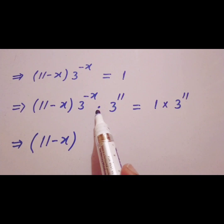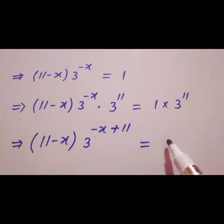We know that when the bases are the same and multiplying with each other, their powers are added. So 3^(-x + 11) = 3^11, which is 3^(11 - x) = 3^11.